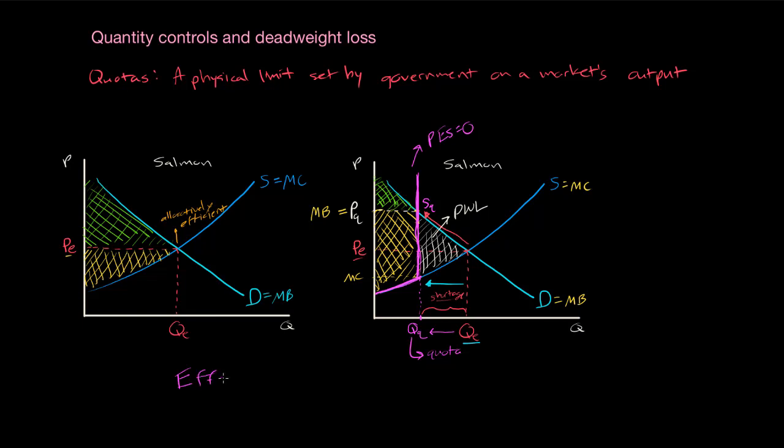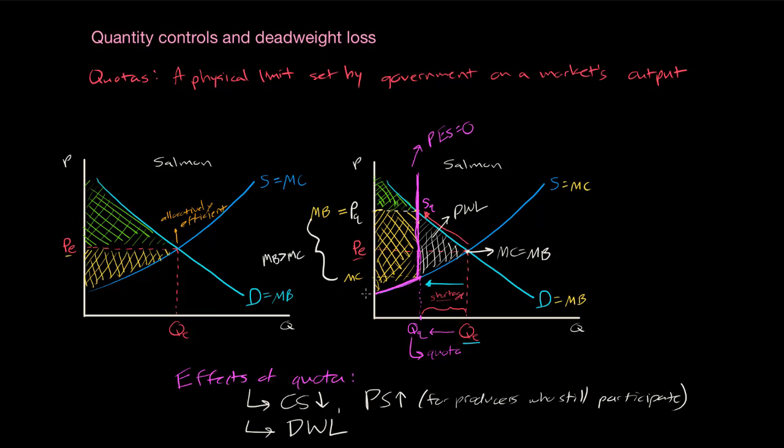Let's go ahead and take some notes down here on the effects of the quantity control, the quota. Consumer surplus is going to decrease. Producer surplus is going to increase but only for producers able to participate in the market. And overall, of course, there is a loss of total surplus. There's a deadweight loss because there will be fewer salmon caught and the price of those salmon will be higher. The market is no longer allocatively efficient. At equilibrium, where we started in this market, marginal cost equals marginal benefit. But as we can see here, at the quota quantity, the marginal benefit is greater than the marginal cost. Society would be better off with more fish caught at a lower price.